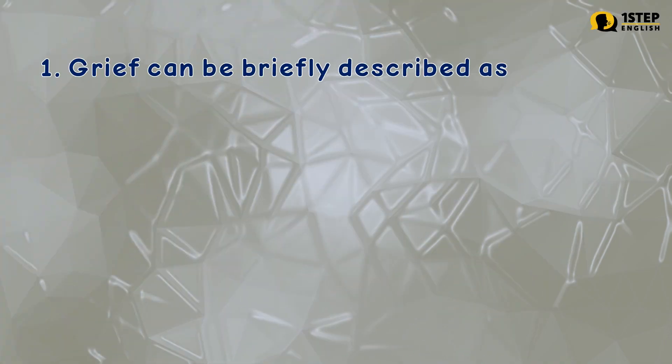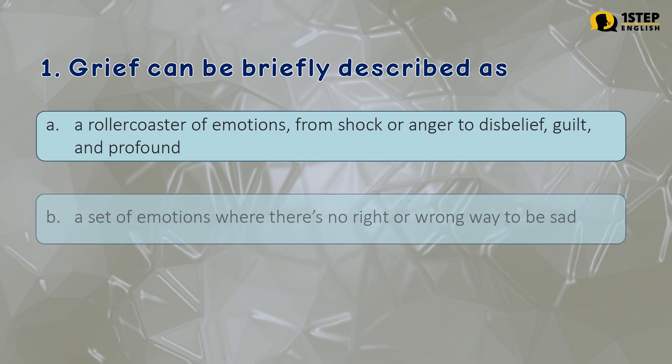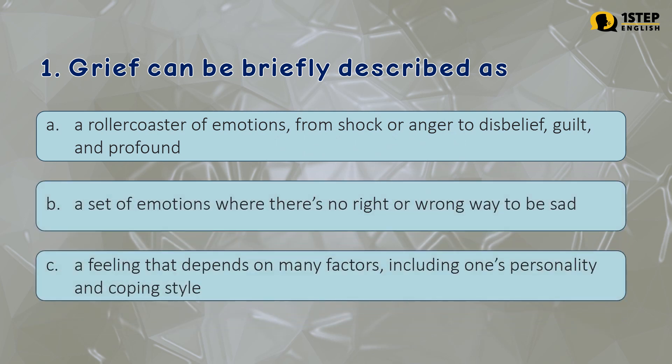Number 1: Grief can be briefly described as — Letter A: a rollercoaster of emotions, from shock or anger to disbelief, guilt, and profound sadness. Letter B: a set of emotions where there's no right or wrong way to be sad. Letter C: a feeling that depends on many factors, including one's personality and coping style. The correct answer is Letter A: a rollercoaster of emotions, from shock or anger to disbelief, guilt, and profound sadness.